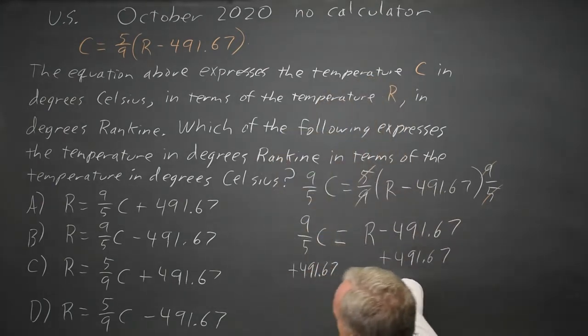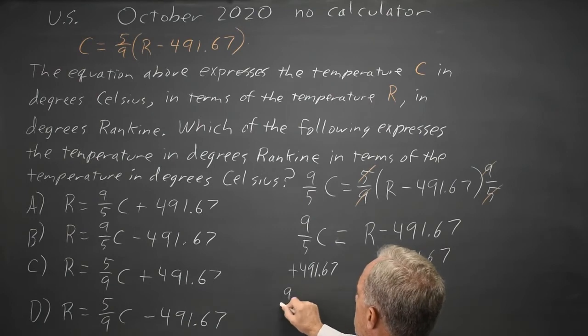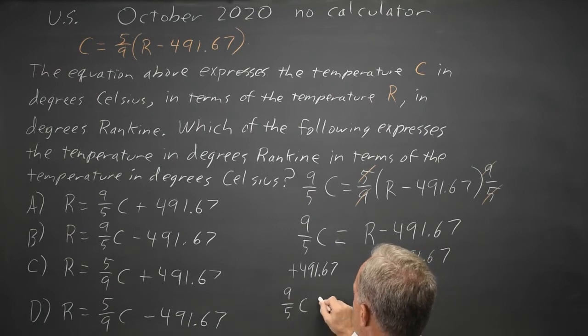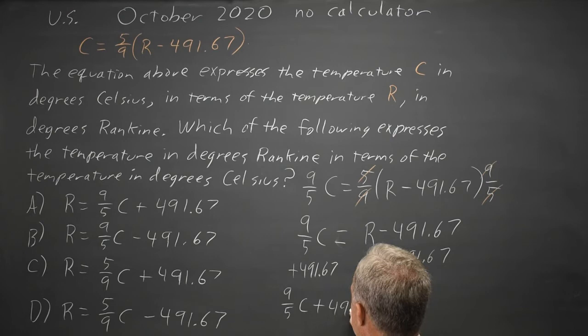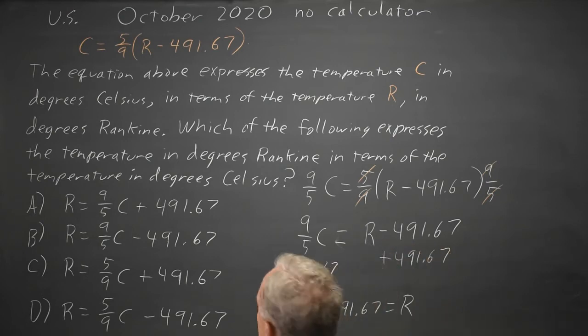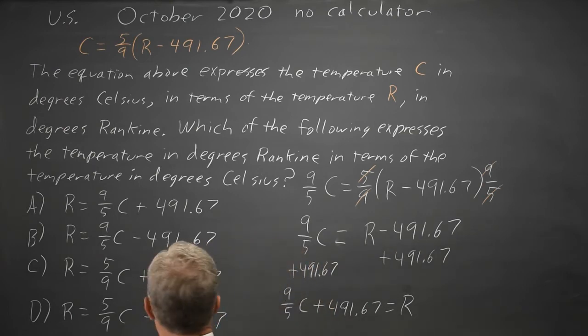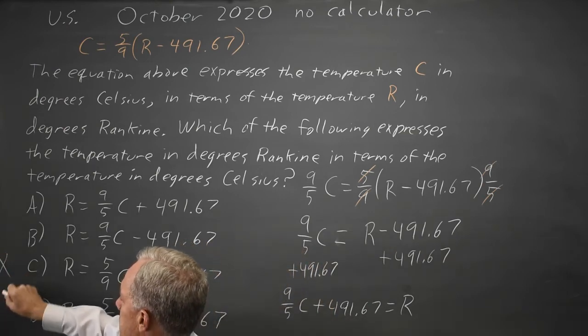And that leaves me with 9 fifths C plus 491.67 equals R. Choices C and D have 5 ninths. We want 9 fifths. So, C and D are wrong.